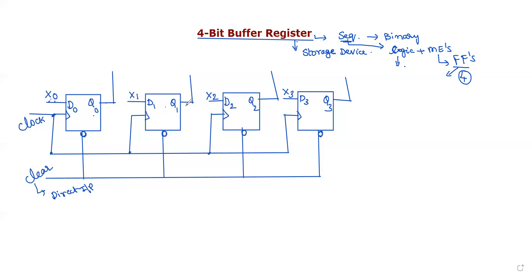The clear input resets all the flip-flops directly, without the influence of the clock pulse. It clears the previously stored data — whether 0 or 1 — and initializes everything to 0. This is called the clear input. There are two such direct inputs: clear and preset. Here, we use only the clear input.